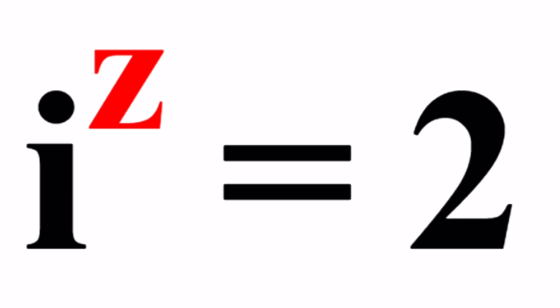We have i, which is our imaginary unit, raised to a power Z, which is a complex number, and we get 2 at the end.